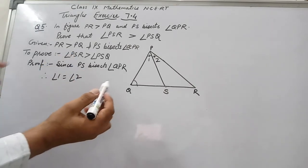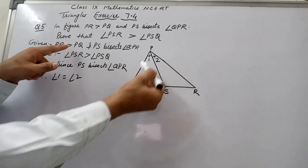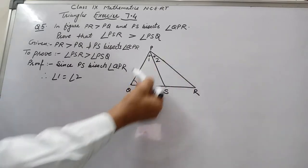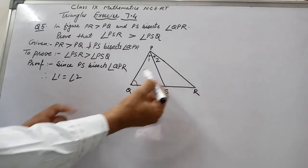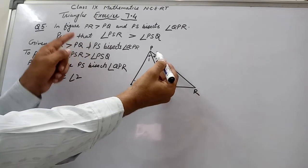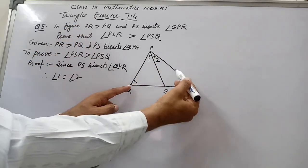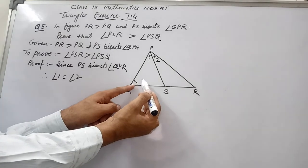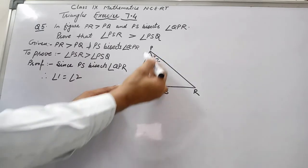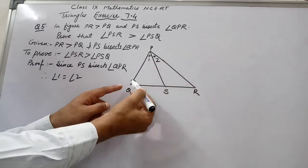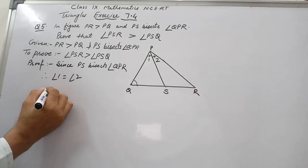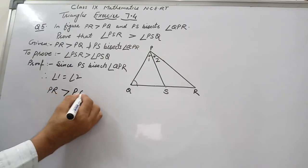It is given that PR is greater than PQ. In triangle PQR, PR is the greater side and PQ is the smaller side. We know that the angle opposite to the longer side is the greater angle. Here the greater side is PR, so angle Q is opposite to PR and angle R is opposite to PQ. Therefore angle Q is greater than angle R.